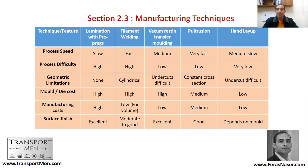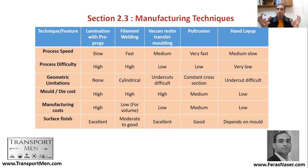There are different manufacturing techniques to consider. These include lamination with prepreg, filament winding, vacuum molding, resin transfer molding, pultrusion — which is very common for producing constant cross-sections — and hand layup, where you put body shell components together by hand. For each technique, we look at process speed, process difficulty, geometric limitation, mold or die cost, manufacturing cost, and surface finish.